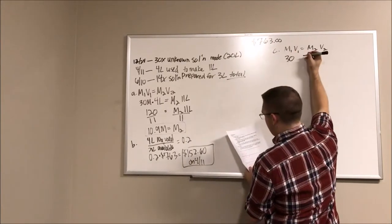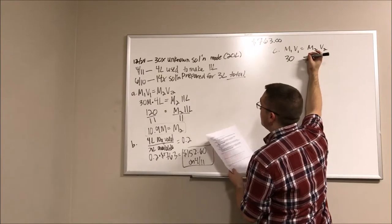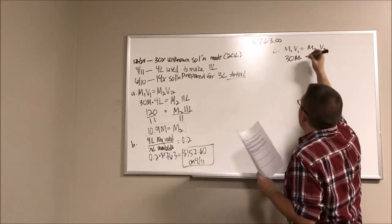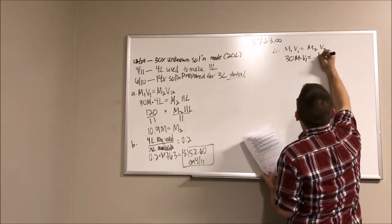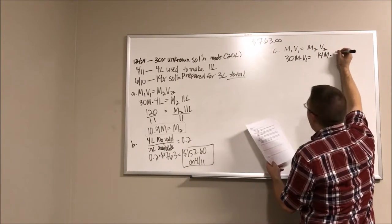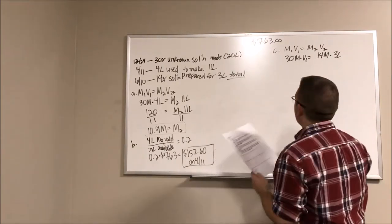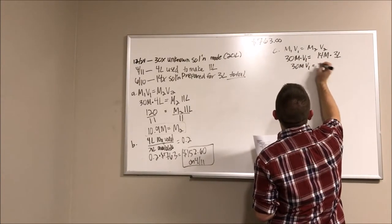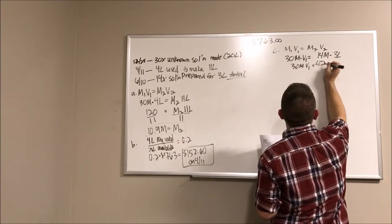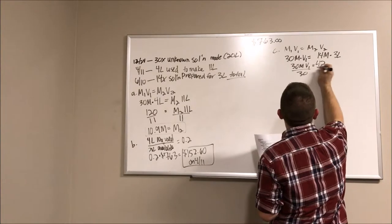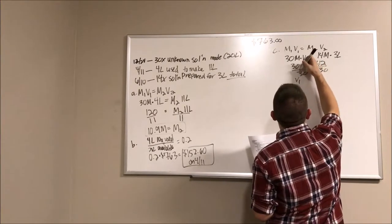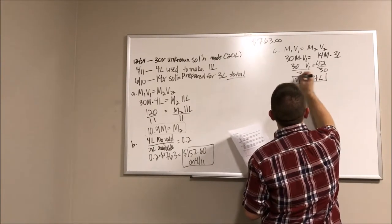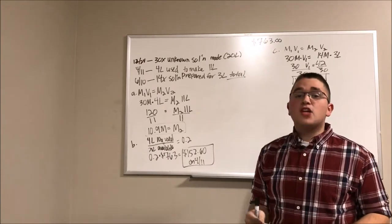All right. Starting off with 30, because we know that is given to us in the problem. Our solution is going to start off at a 30 concentration, 30M. We don't know the volume yet, so we're going to leave that as V1, which is equal to 14M, because that's going to be our new concentration, times 3 liters, because that's going to be our new volume. So again, if we do some basic algebra, that's going to give us 30M V1 equals 14 times 3, which is 42, divide both sides by 30, and our V1 is going to equal 1.4 liters.